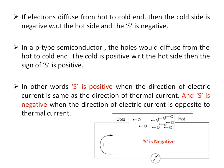If electrons diffuse from the hot end to the cold end, the cold side is negative with respect to the hot side and S is negative, as in aluminum. In a p-type semiconductor, holes diffuse from hot to cold end, so the cold end is positive with respect to the hot side and S is positive. This is also common for some metals like copper, where electrons diffuse from the cold end to the hot end, giving a positive Seebeck coefficient. In other words, S is positive when the direction of electric current is the same as the direction of thermal current, and S is negative when they are opposite.